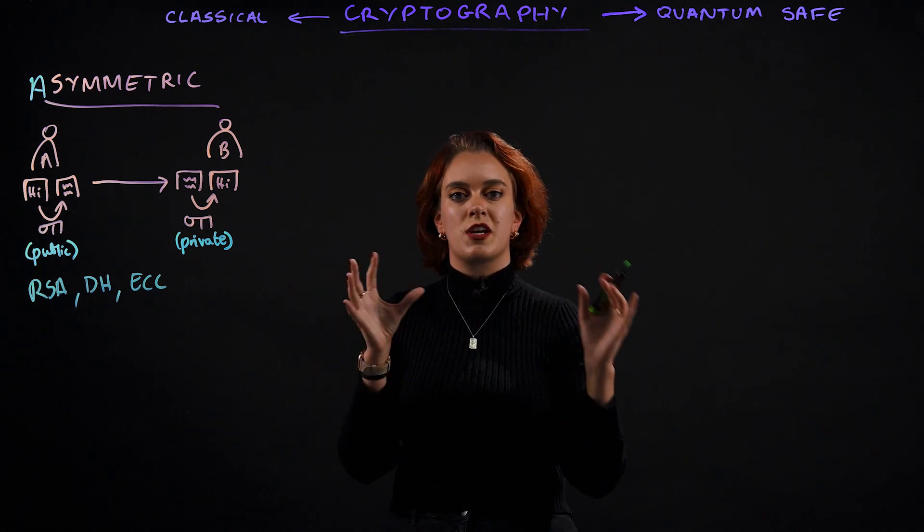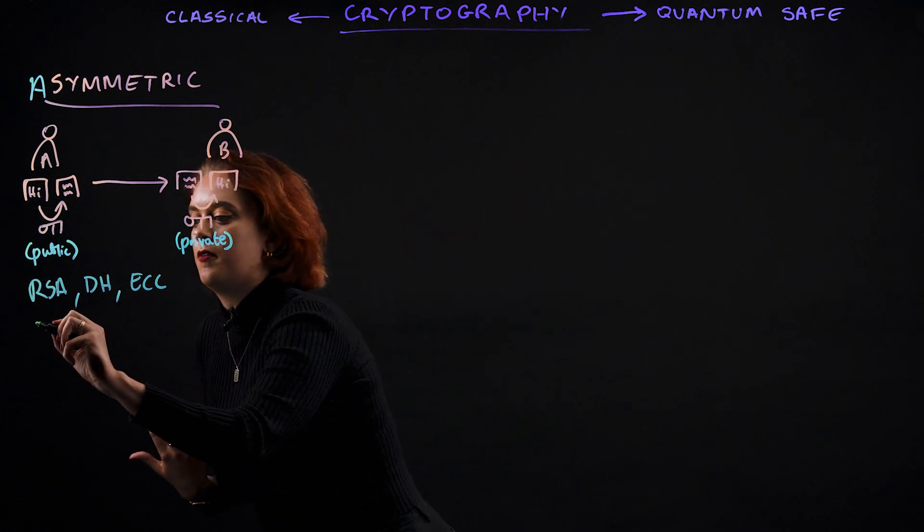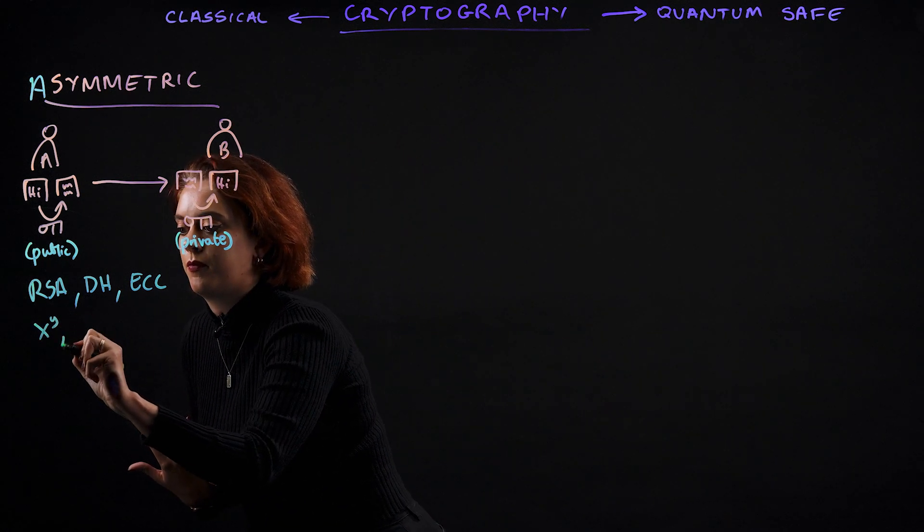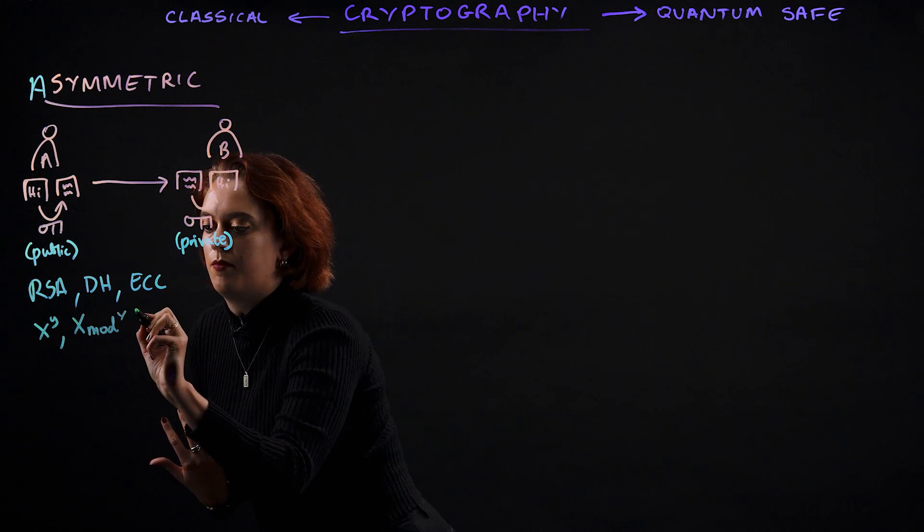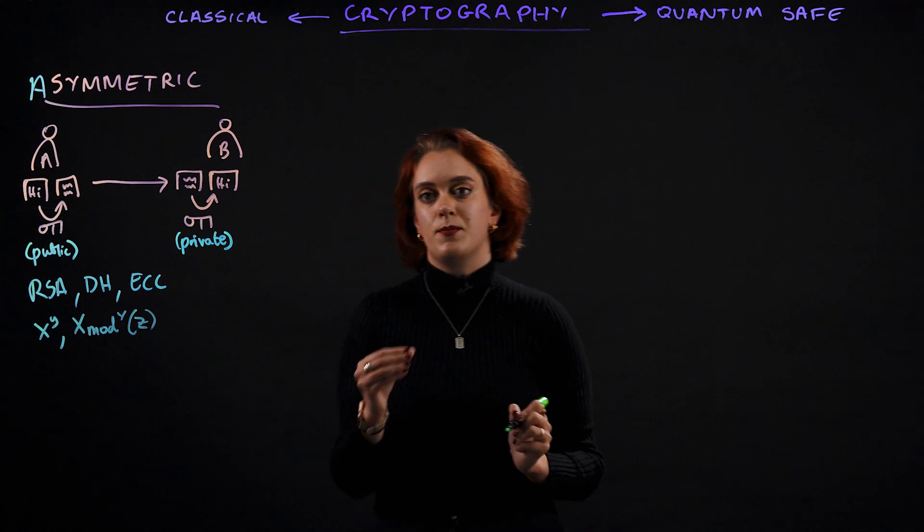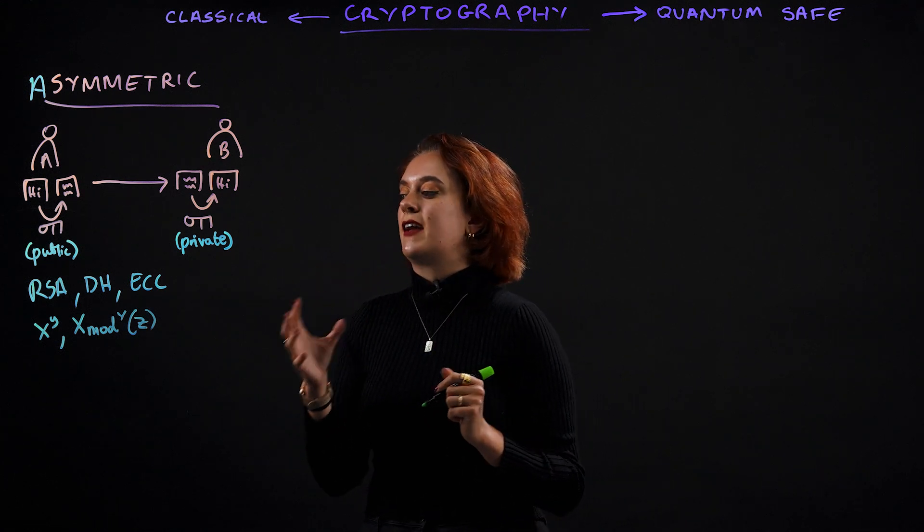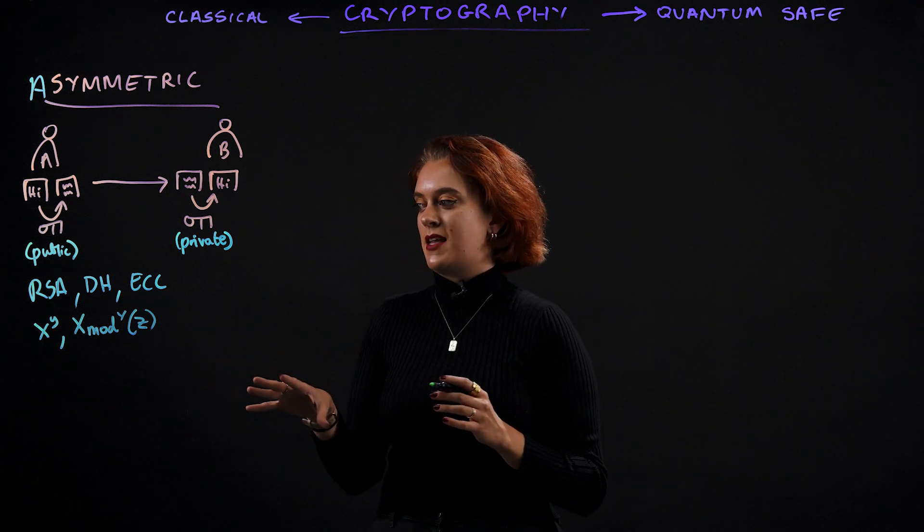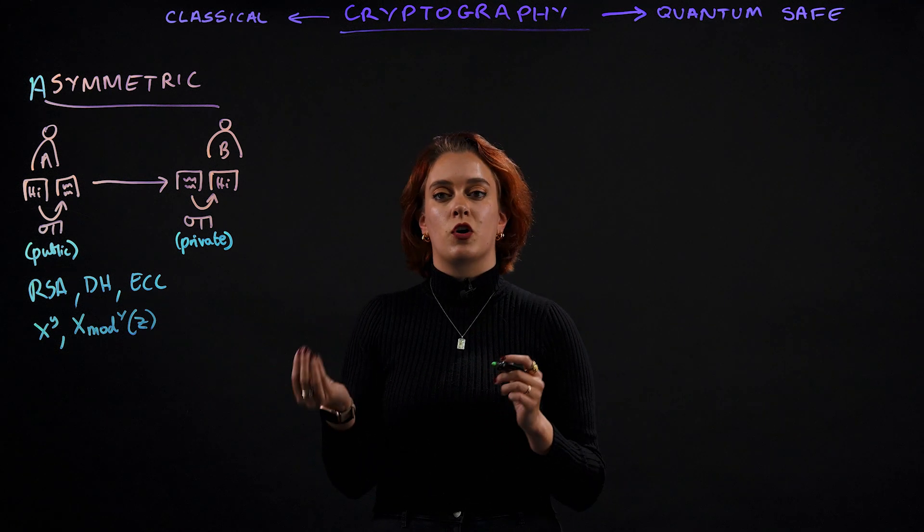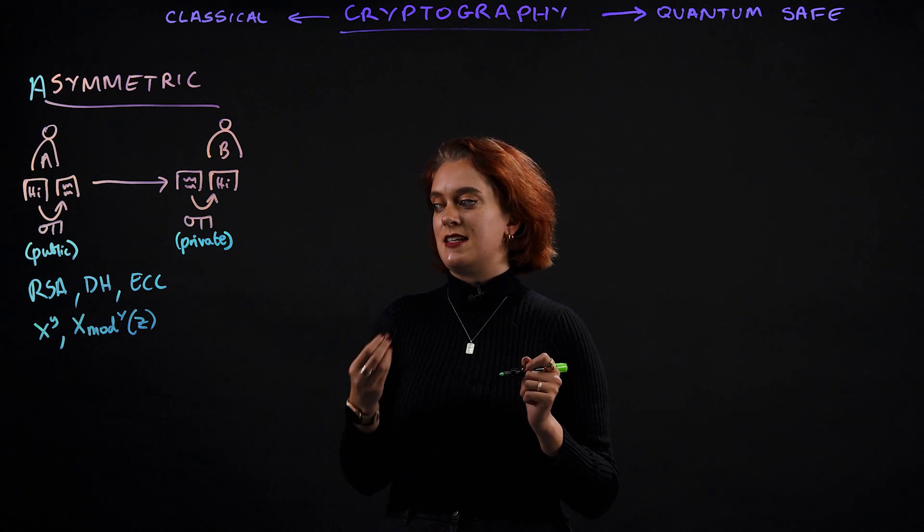And they are based on three different types of mathematical problems, namely factorization, discrete logarithm, and elliptic curve discrete logarithm. And these cryptographic algorithms work so well because these mathematical problems that they're based on are very difficult to solve, but their solutions are very computationally easy to check.